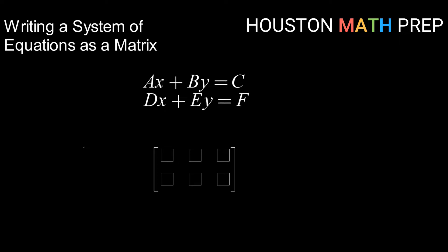The first thing that we need to note is that our system of equations needs to be in a particular form before we enter it into a matrix. That form is standard form for each equation — having all of your variable terms on one side of the equal sign and having your constants on the other side. Also we want to make sure that we arrange each equation so that our variables are lined up with one another: all of our x's in a line, all of our y's in a line, and so forth.